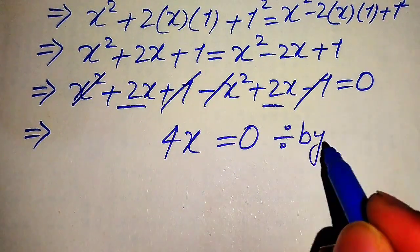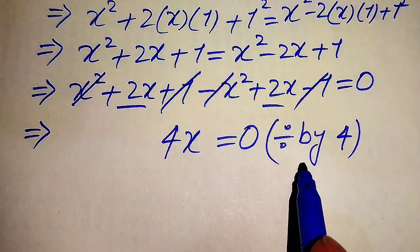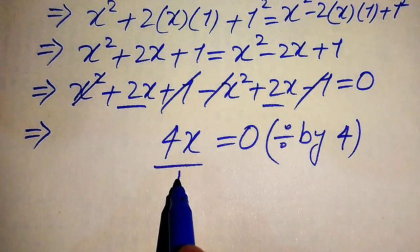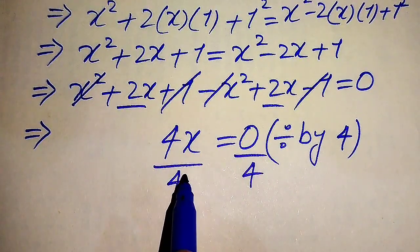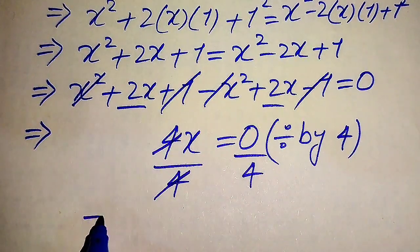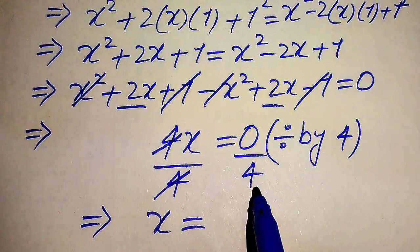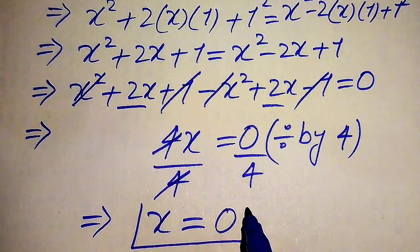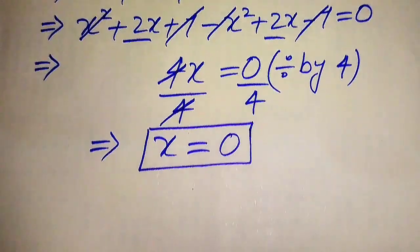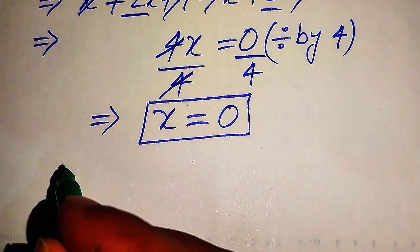Our target is to find the value of x, so we divide both sides by 4. The 4s cancel out and we get x = 0/4, which becomes x = 0. So we obtain only one value of x, which is 0.